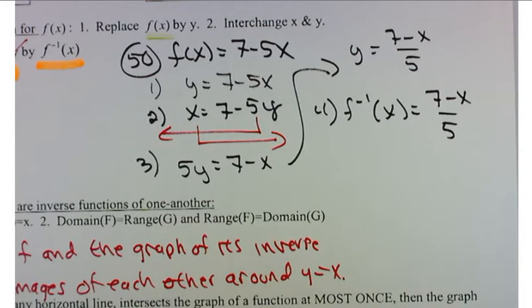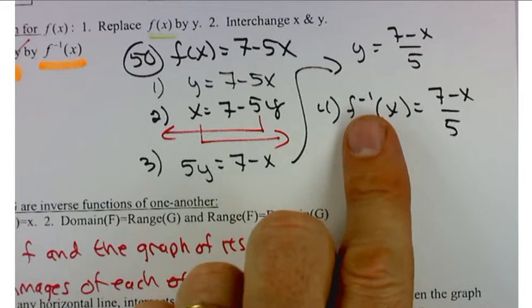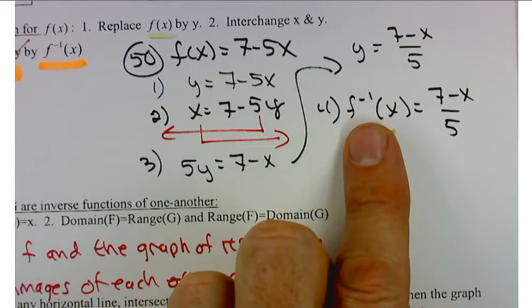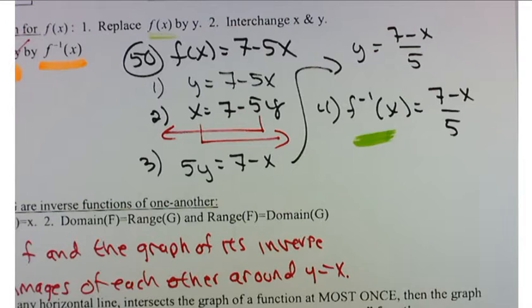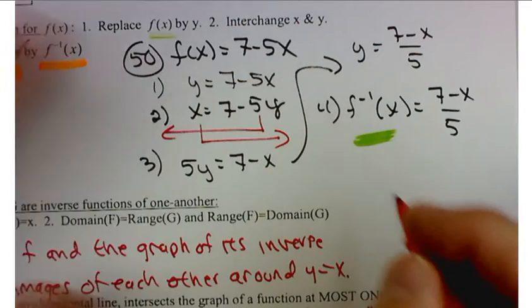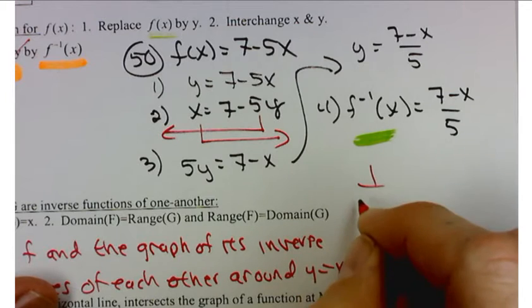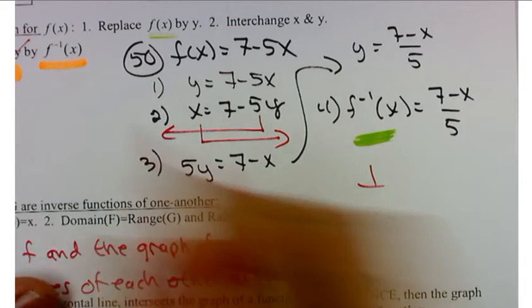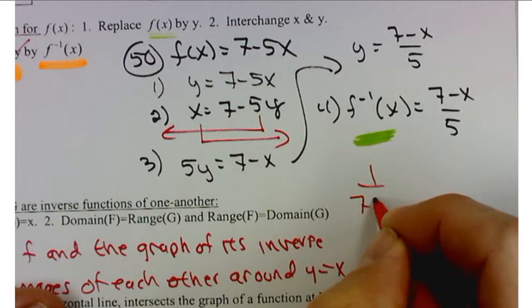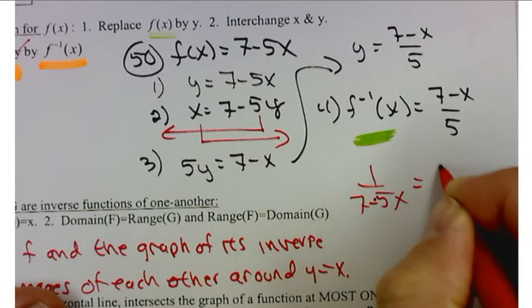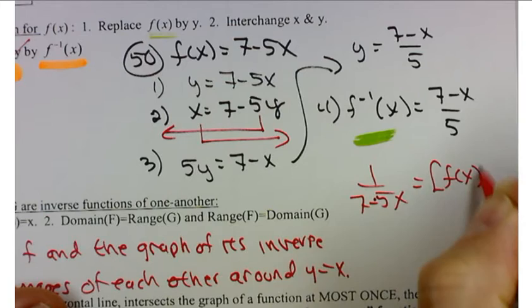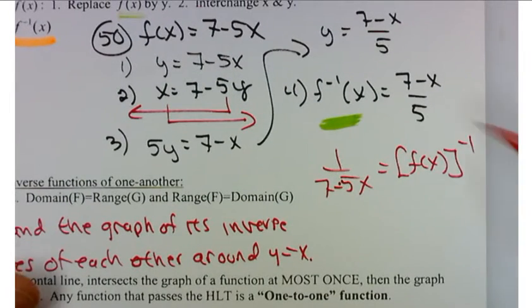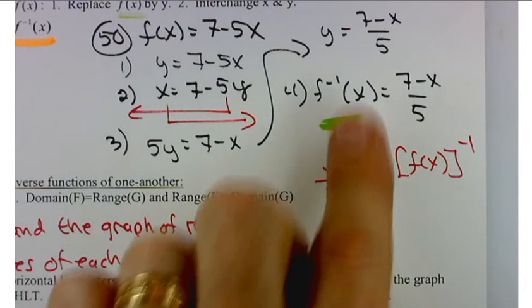I do want to see that inverse notation. It's something I want you to be comfortable with. One thing that you should be aware of is that this inverse notation has nothing to do with the reciprocal. Nothing whatsoever. If you look at the graphs of this and the reciprocal function, which would be 1 over 7, excuse me, 1 over 7 minus 5x, that would be f of x to the negative first. These have nothing to do with each other. Nothing whatsoever. This is the inverse function, and that's what I'll be looking for.